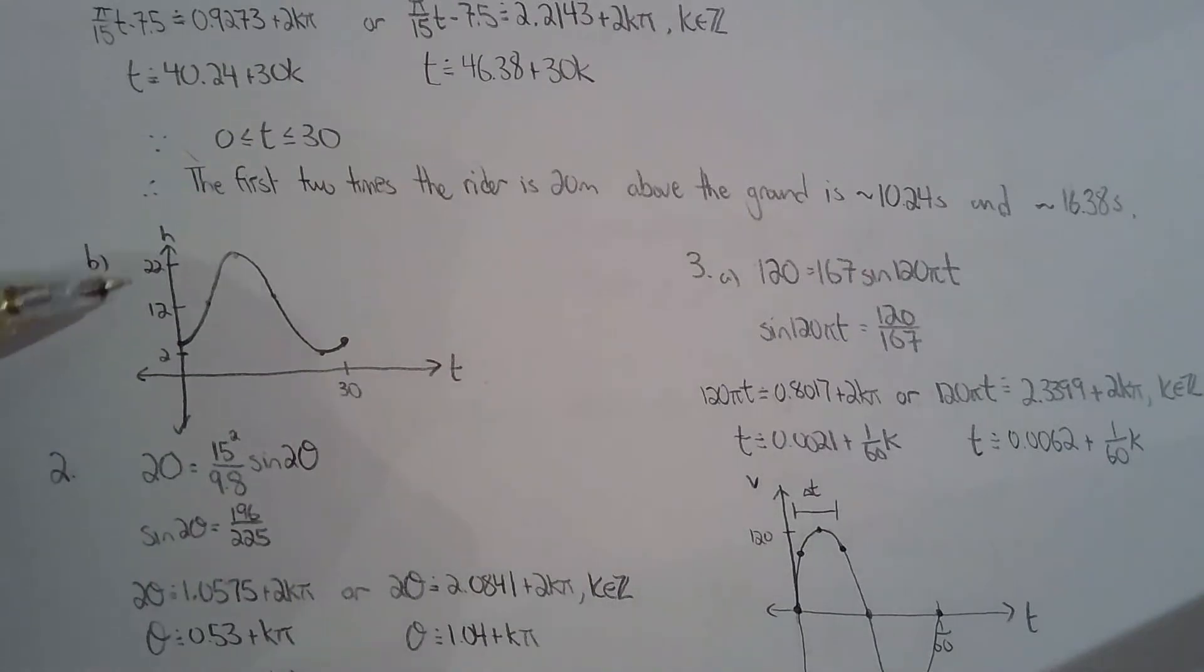For B, just graph it, not much to say but it's interesting that the rider doesn't start at the bottom of the wheel. That's why the graph looks a little skewed but it is what it is. The rider doesn't start at the bottom so you have to make note of that.